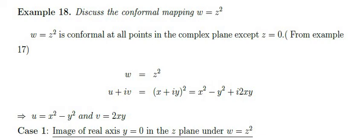For w = z², we write w = u + iv = (x + iy)². Expanding using (a + b)² gives x² − y² + i(2xy). Therefore the real part u = x² − y² and the imaginary part v = 2xy. We now consider four cases for the images of certain curves under the transformation w = z².